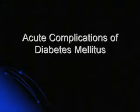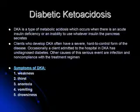Diabetic ketoacidosis, or DKA, is a type of metabolic acidosis which occurs when there is an acute insulin deficiency or an inability to use whatever insulin the pancreas secretes. Clients who develop DKA often have a severe, hard-to-control form of the disease. Occasionally, a client admitted to the hospital in DKA has undiagnosed diabetes. Other causes include infection and non-compliance with the treatment regimen.